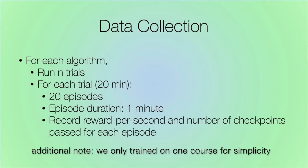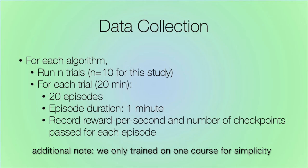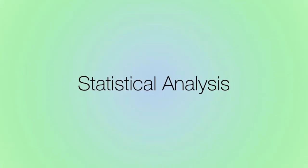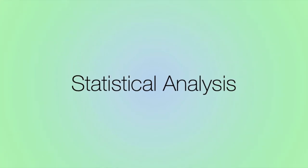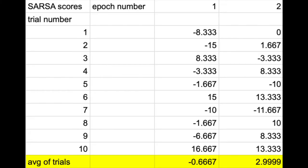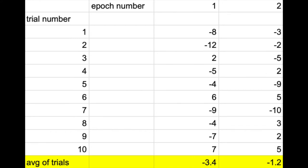Sadly, because of time constraints, we could only run 10 trials for each algorithm. Now that we have the data, we can perform statistical analysis. We need to ask two questions: does one algorithm really learn faster than the other, and is there any difference in the stability of the two algorithms? We first take the average over all trials for our reward per second data and checkpoint data so that we have more stable measurements.